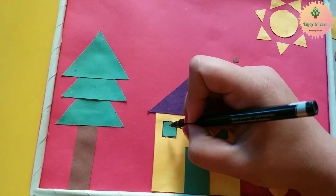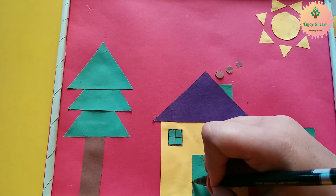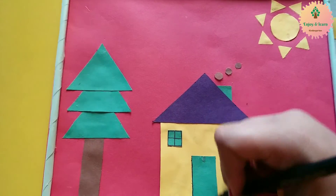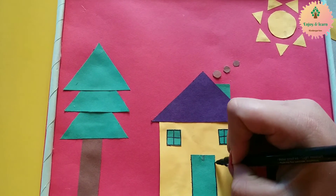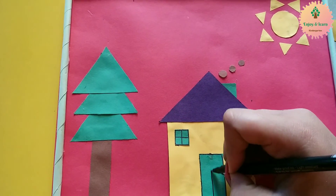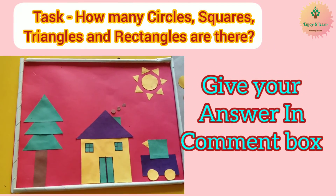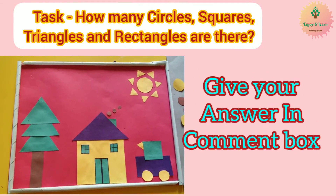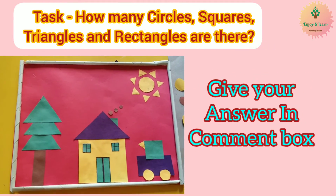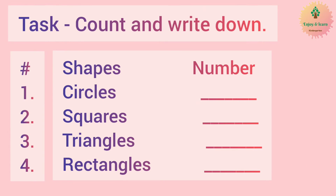With this data handling task, kids can count the number of squares, circles, triangles, and rectangles and make a chart out of it. Do let me know how many circles, squares, triangles, and rectangles are there in this scenery. Thank you for watching!